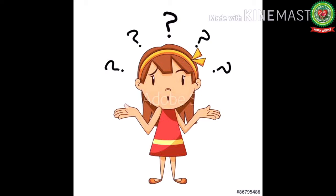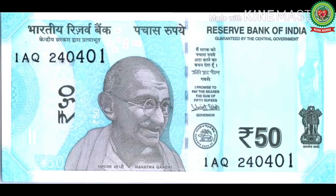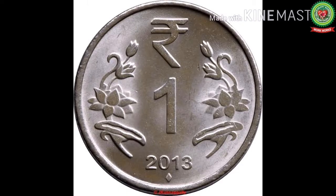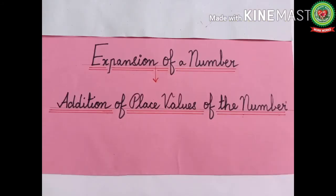Is there any currency note for 551 which she can pay with? No. So what they did is they divided the amount into three parts — they paid a 500 rupee note, a 50 rupee note, and a one rupee coin. The total bill was 551. They have done the expansion of the number. Expansion of a number means writing the place values and adding them.